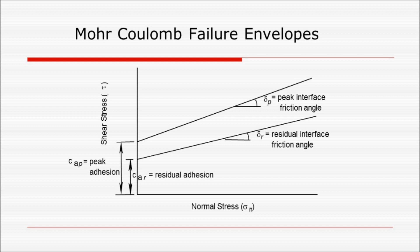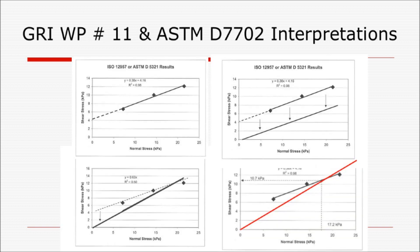In some cases this is not a true residual, but you move the device as long as you can and get the best result you can. It's sometimes referred to as a post-peak Mohr-Coulomb envelope. You have a white paper by GRI—white paper number 11—which gives you a response. In addition to that, you have ASTM D7702, which shows you how to interpret the shear strength versus deflection plots into Mohr-Coulomb plots.